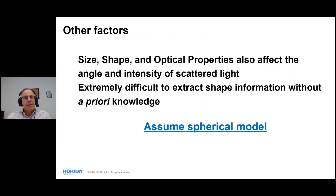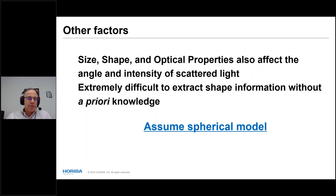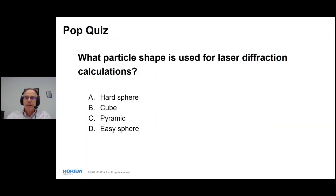Particle size, shape, and optical properties all affect the angle-intensity of scattered light, but you really cannot extract shape information without significant a priori knowledge or a specialized detector arrangement not commercially available. In practice we assume everything is spherical — the instrument treats all particles as hard spheres.